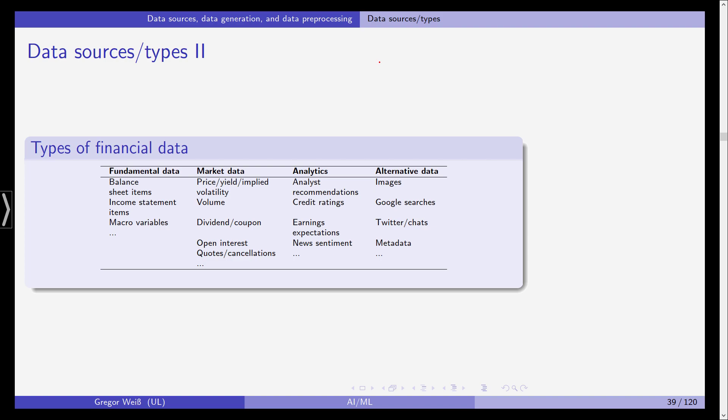In the fourth category, which is not financial but complements the other three categories, is the alternative data section. For example, images - could be images of persons, companies, products, but could also be simply images of bills, Google searches, Twitter chats, and metadata.